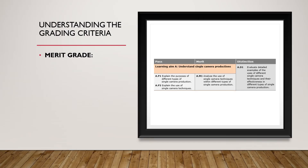The grading criteria, as you see here: Pass is explain, which you will do anyway. Then analyse, and then evaluate. Follow this grading criteria to the letter and you won't go far wrong in achieving what my expectations are for all the class, and that is a D1.